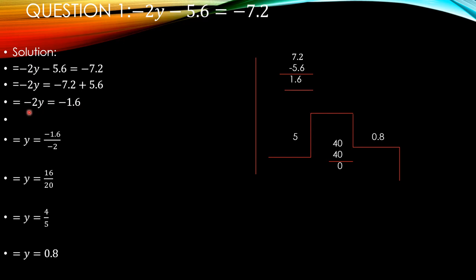Now minus 2y. 2 is multiplied by y. Now we are moving 2 on the right hand side. 2 is changed into division. Division means it become denominator.